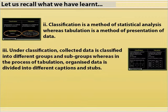Number 3: Under classification, collected data is classified into different groups and subgroups, whereas in the process of tabulation, organized data is divided into different captions and stubs.